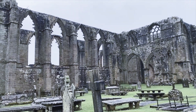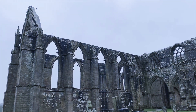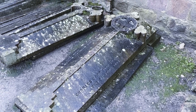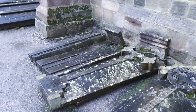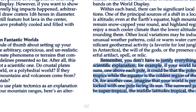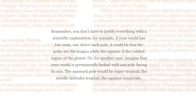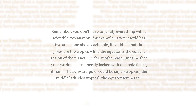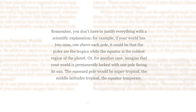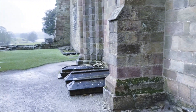A satisfactory wilderness generation method does not necessarily need to follow any assumption that your campaign setting is a planet that orbits the sun like the earth does in reality — anything goes really. The World Builders Guidebook says: 'Remember, you don't have to justify everything with a scientific explanation.' For example, if your world has two suns, one above each pole, it could be that the poles are the tropics while the equator is the coolest region of the planet. Or imagine that your world is permanently locked with one pole facing its sun — the sunward pole would be supertropical, the middle latitudes tropical, and the equator temperate. So for our wilderness generation method, we can keep it simple.